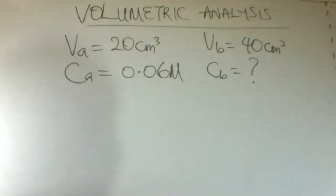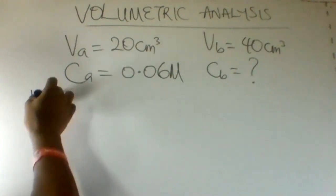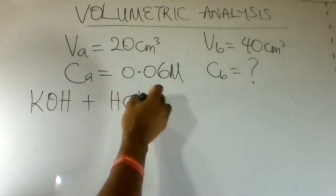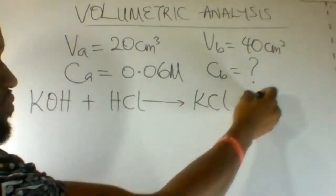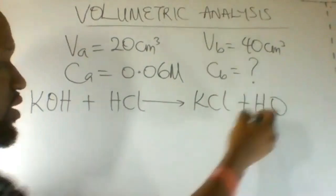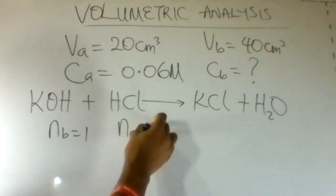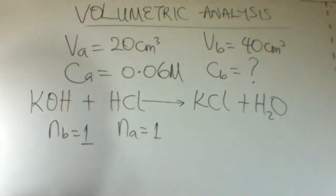We need to look for that. The equation for the reaction is KOH plus HCl. This gives us KCl plus H₂O. Number of moles for the base is 1. Number of moles for the acid is 1. So this is ratio 1 to 1, base to acid.